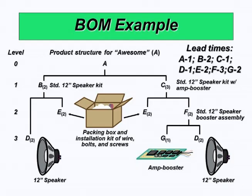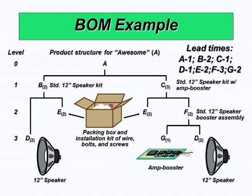Item A has a lead time of 1 — once you have B and C ready, it will take one week to assemble them to get A. A lead time of 2 for B means it takes 2 weeks to put D and E together to make B. Similarly, item D takes 1 week, item G takes 2 weeks, item F takes 3 weeks, and item E takes 2 weeks, which is the ordering time — the time it takes to place an order and receive the packing box and installation kit of wire, bolts, and screws. You are not making it, you are ordering it.